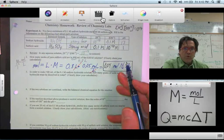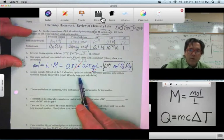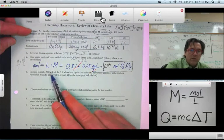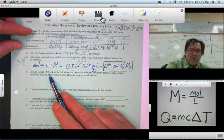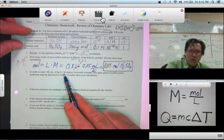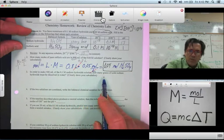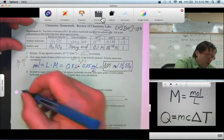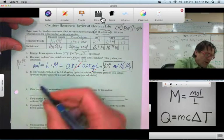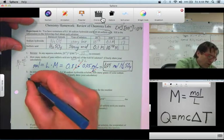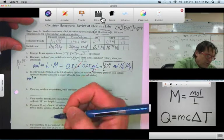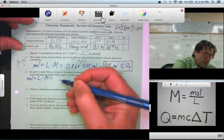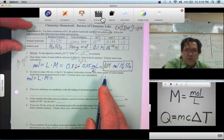So we've worked to this point, we've figured out the moles in question two. Let's do a similar calculation in question three. In order to make 500 milliliters of 0.1 molar sodium hydroxide solution, how many grams of solid sodium hydroxide must be dissolved in water? We know that molarity equals moles over liters, so we need to figure out the moles.